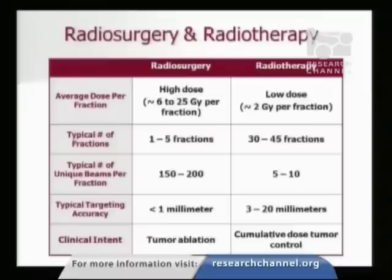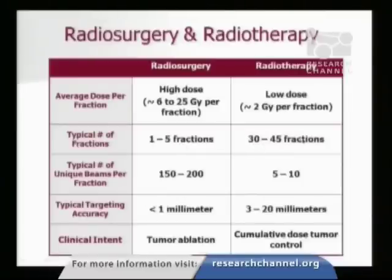In terms of differences between radiosurgery and radiotherapy: radiosurgery uses high dose per treatment, while radiotherapy uses low dose per treatment. Because some dose is spread to normal areas in radiotherapy, we give a very small dose per treatment so normal tissues can repair the injury between sessions. If we gave all the dose in a single session, normal tissue would be irreparably injured. With radiosurgery, we're able to give the dose in one to five sessions rather than 30 to 45 sessions with conventional radiation.